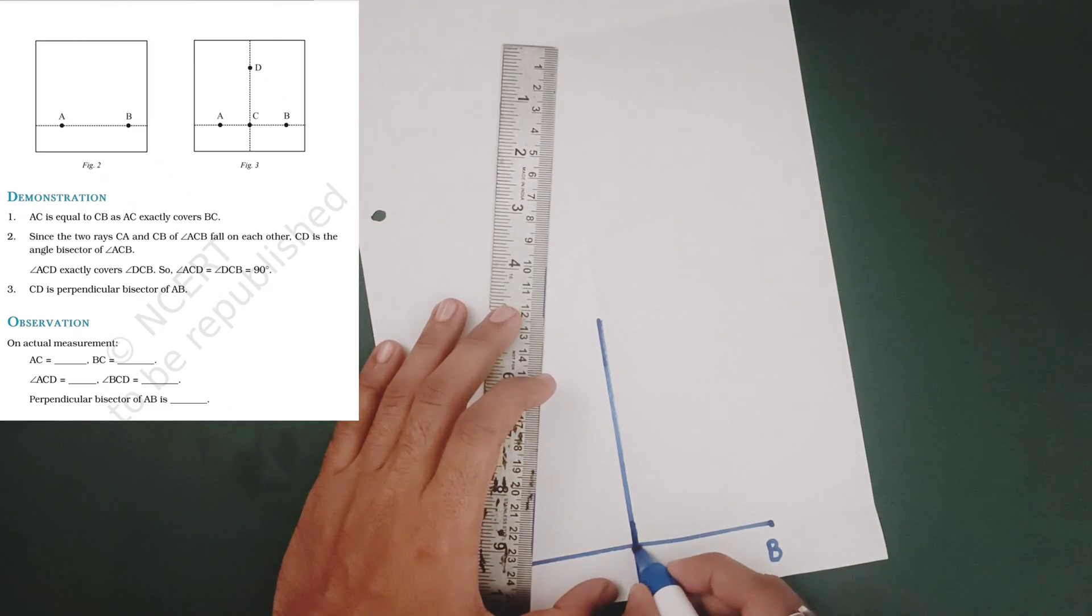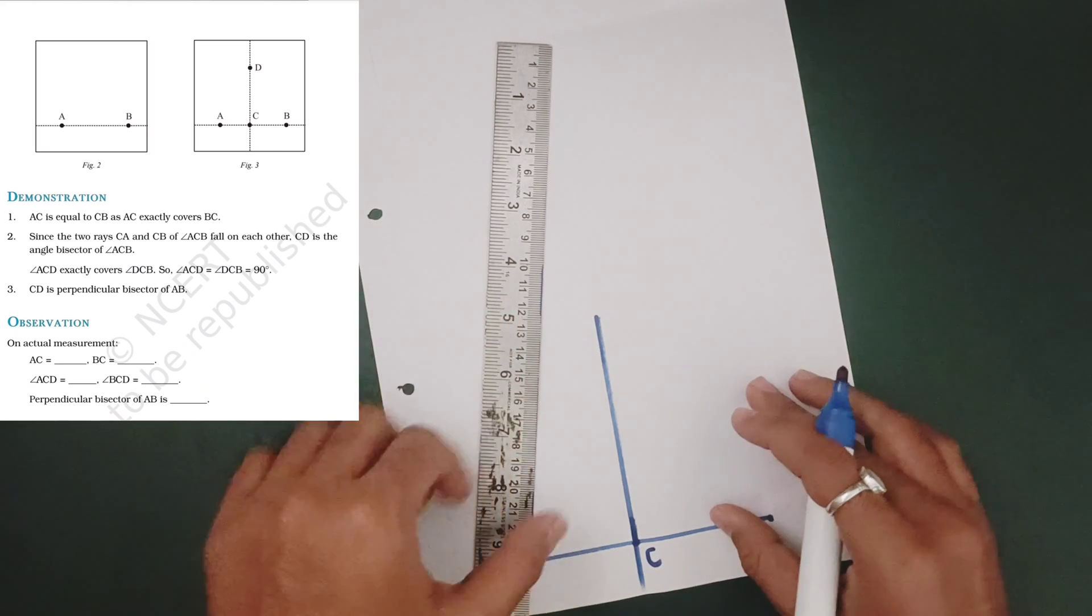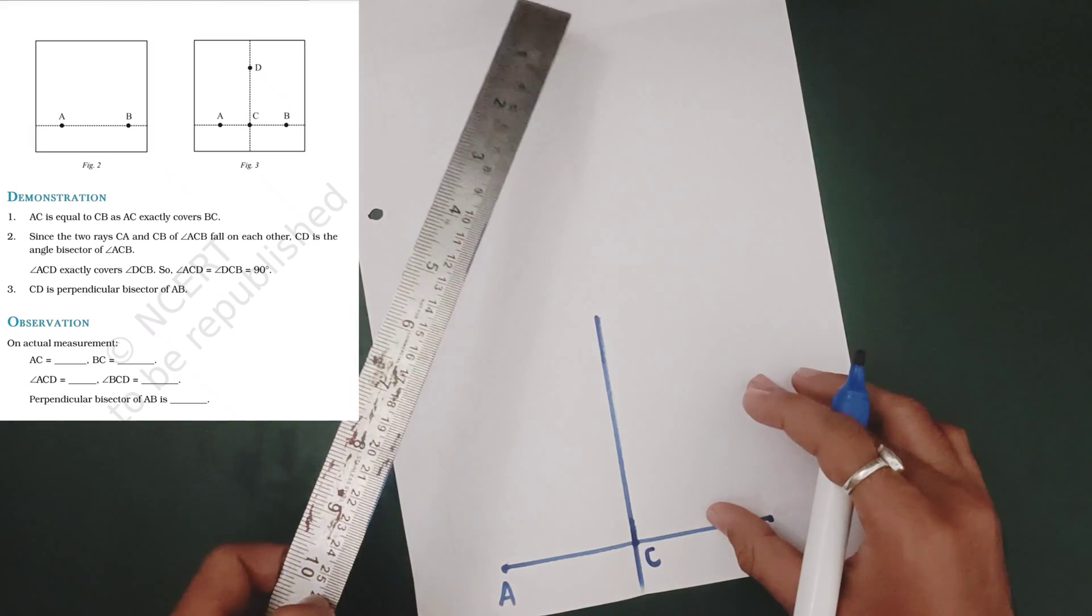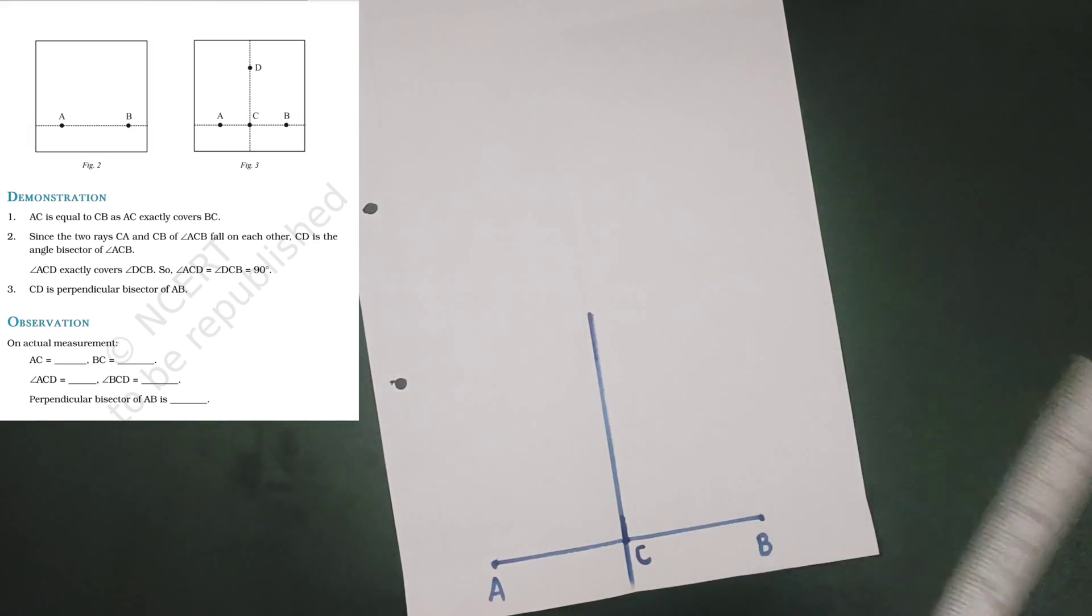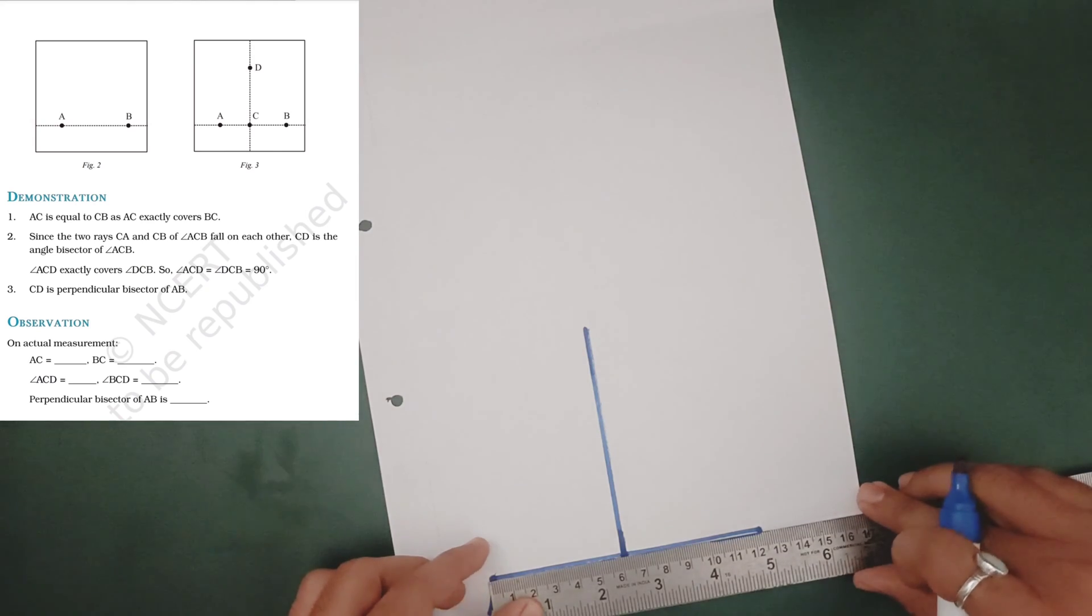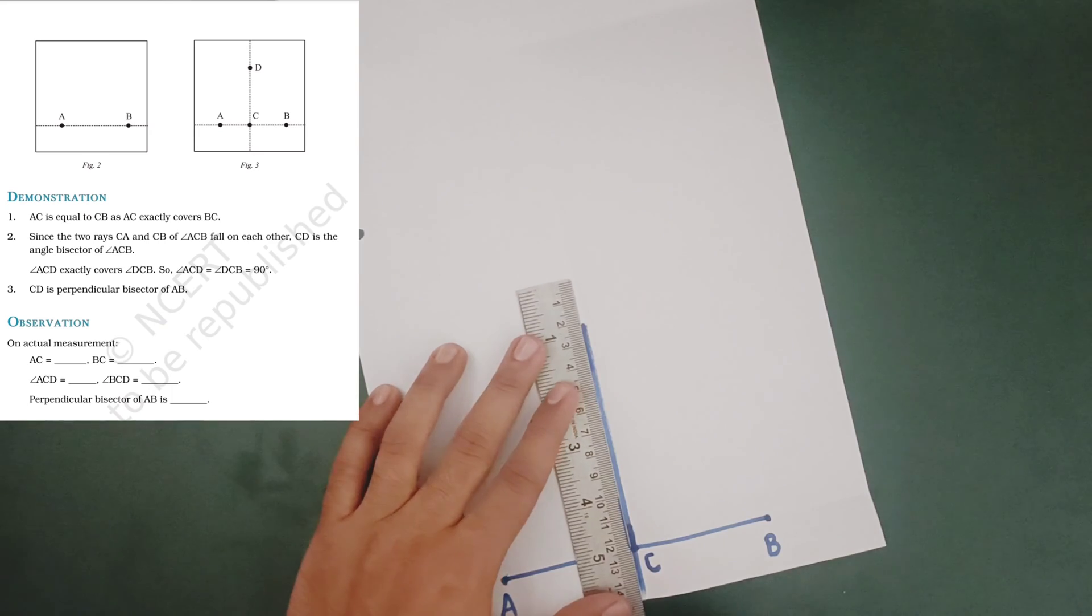Name this point as C. It is 12.5. Mark a point D.